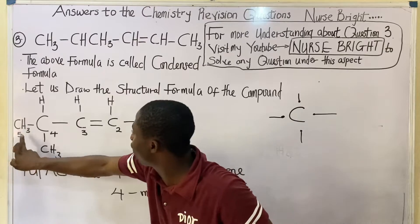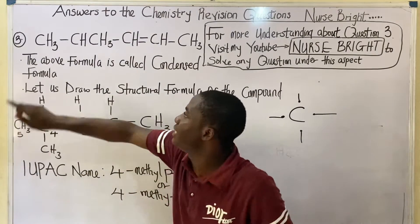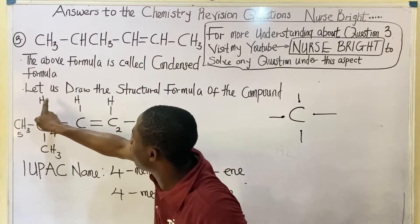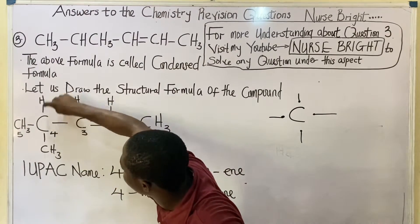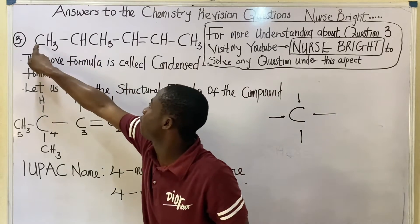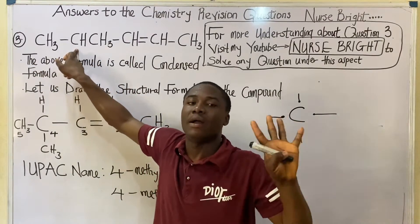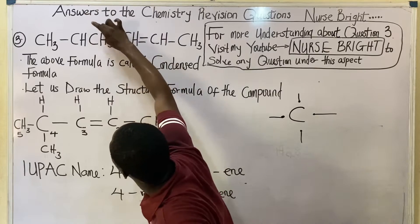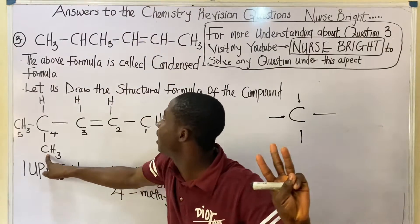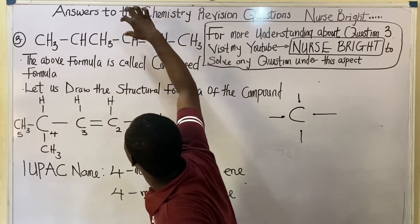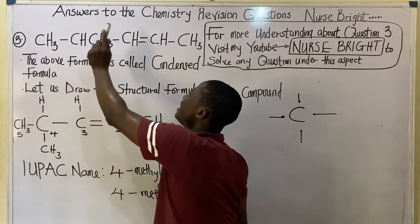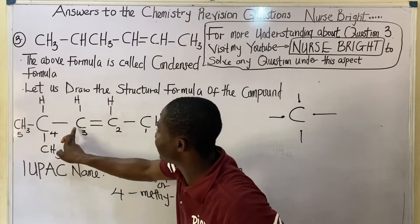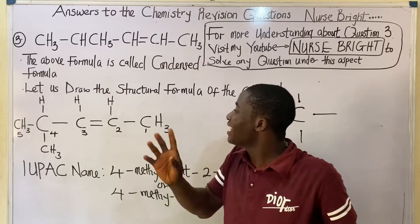This first carbon is bonded to a CH₃ group. The same carbon is also bonded to a hydrogen — I'll place hydrogen going down. So this carbon is now bonded to CH₃ and to H. Remember, carbon can form four bonds, so we work towards completing them. This same carbon is also bonded to another CH₃ going down — that accounts for three bonds.